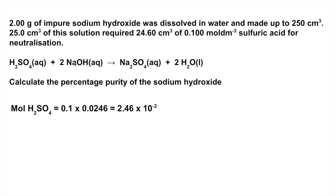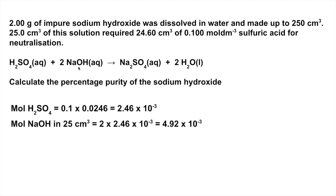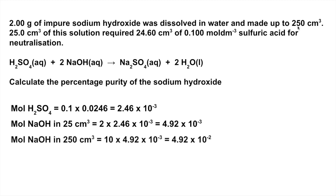The moles of sodium hydroxide that must have been present is going to be 2 times that from the mole ratio, so we double 2.46 × 10⁻³. These moles were in 25 cm³, but the total solution was 250 cm³, so we multiply by 10. These must be the moles of sodium hydroxide dissolved in the solution, and we convert that to grams by multiplying by the MR of sodium hydroxide, which is 40.